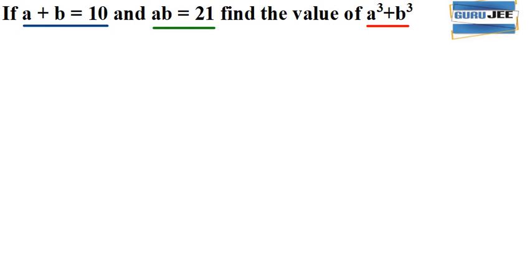So at first let us write the given things. It is given that a plus b is equal to 10 and ab is equal to 21.